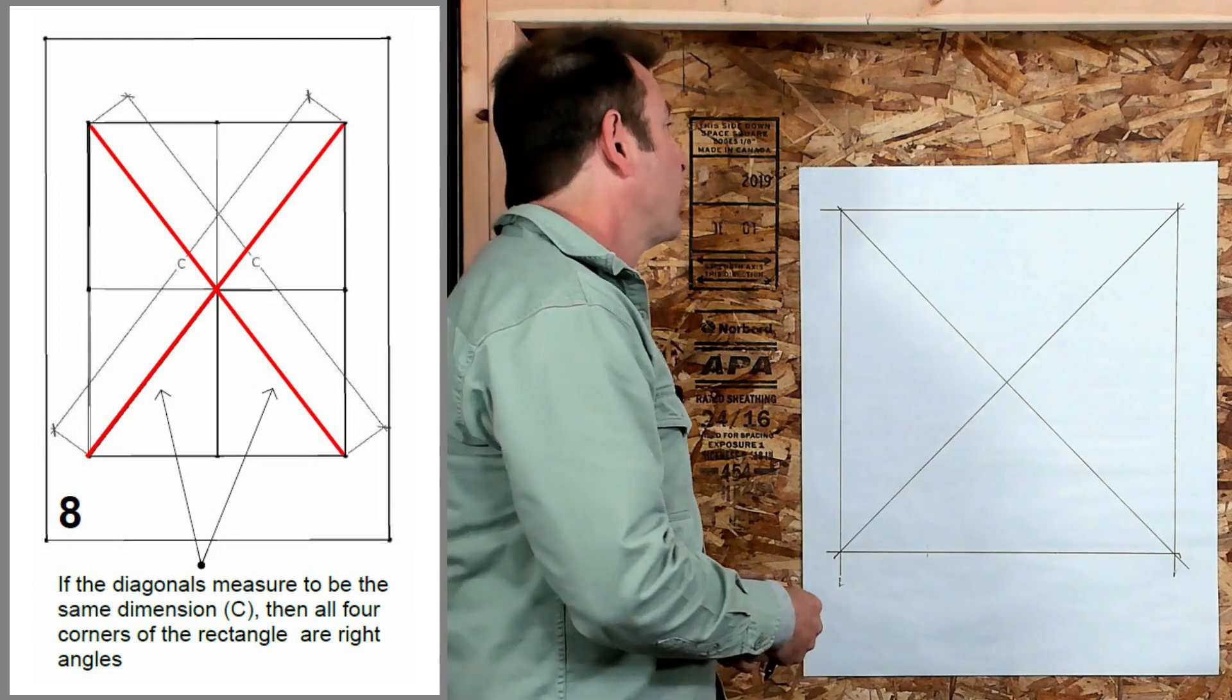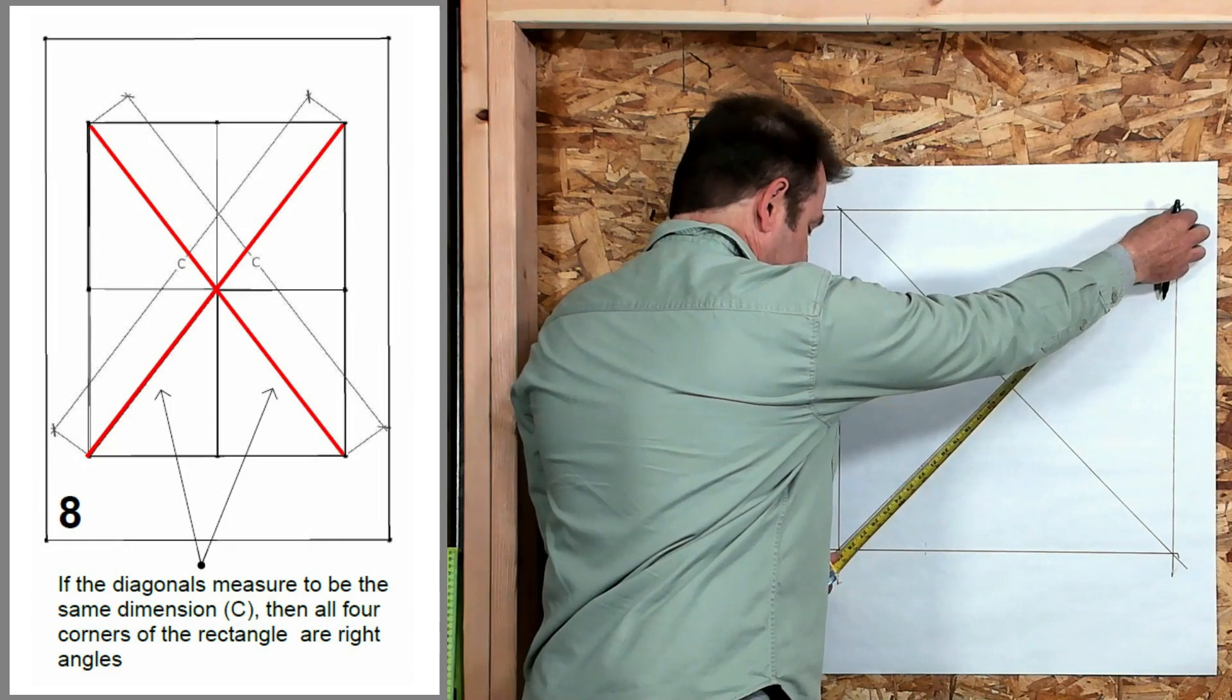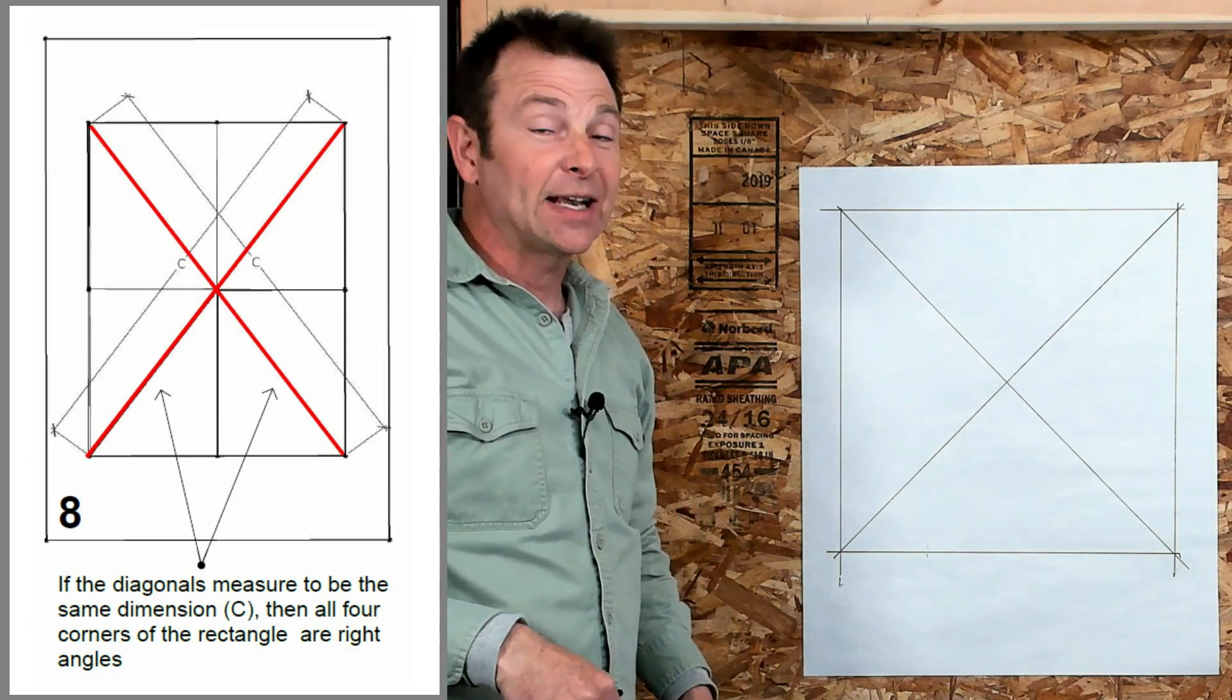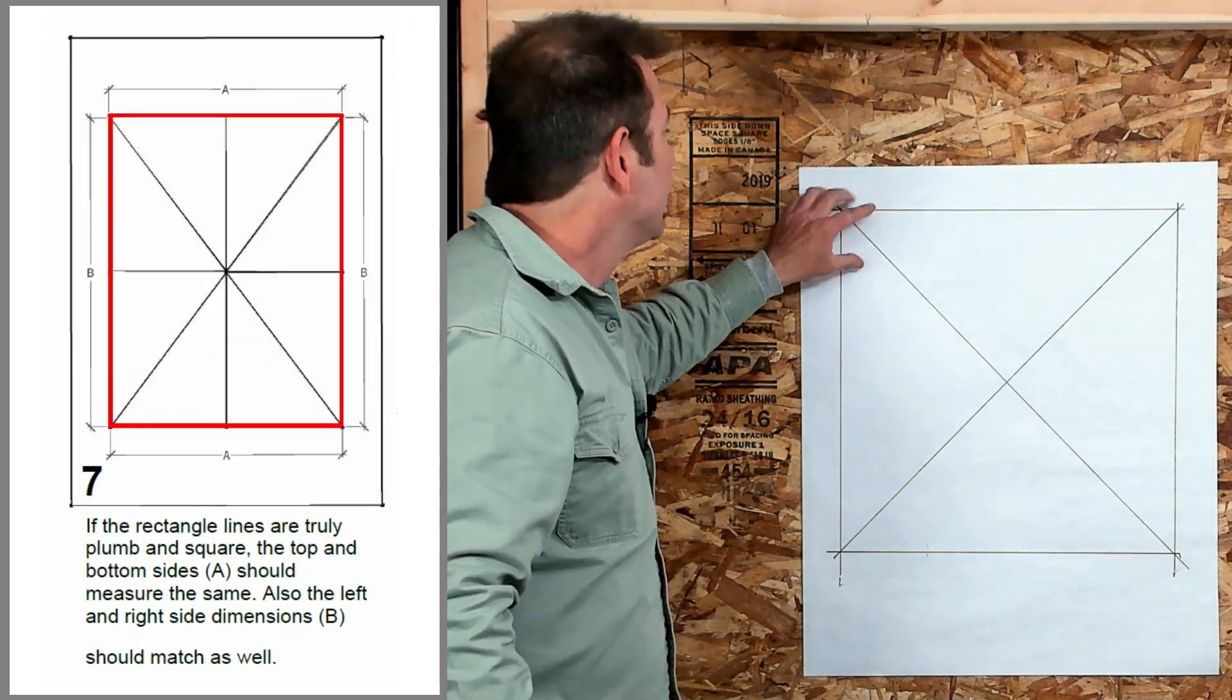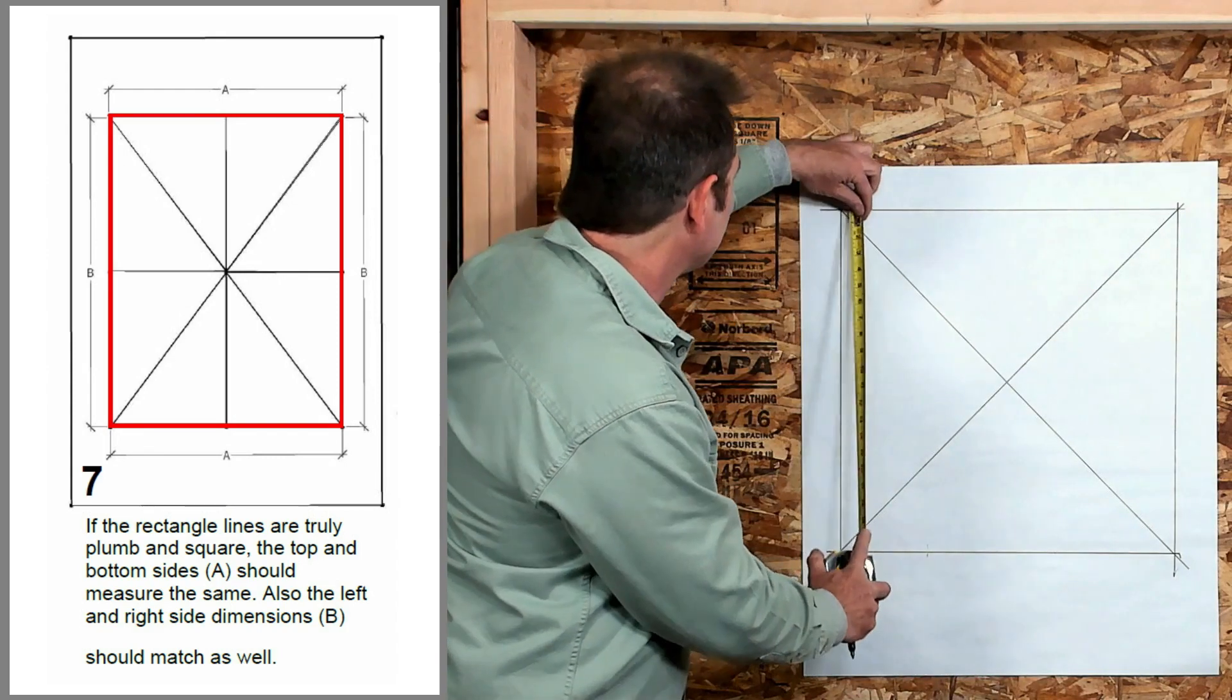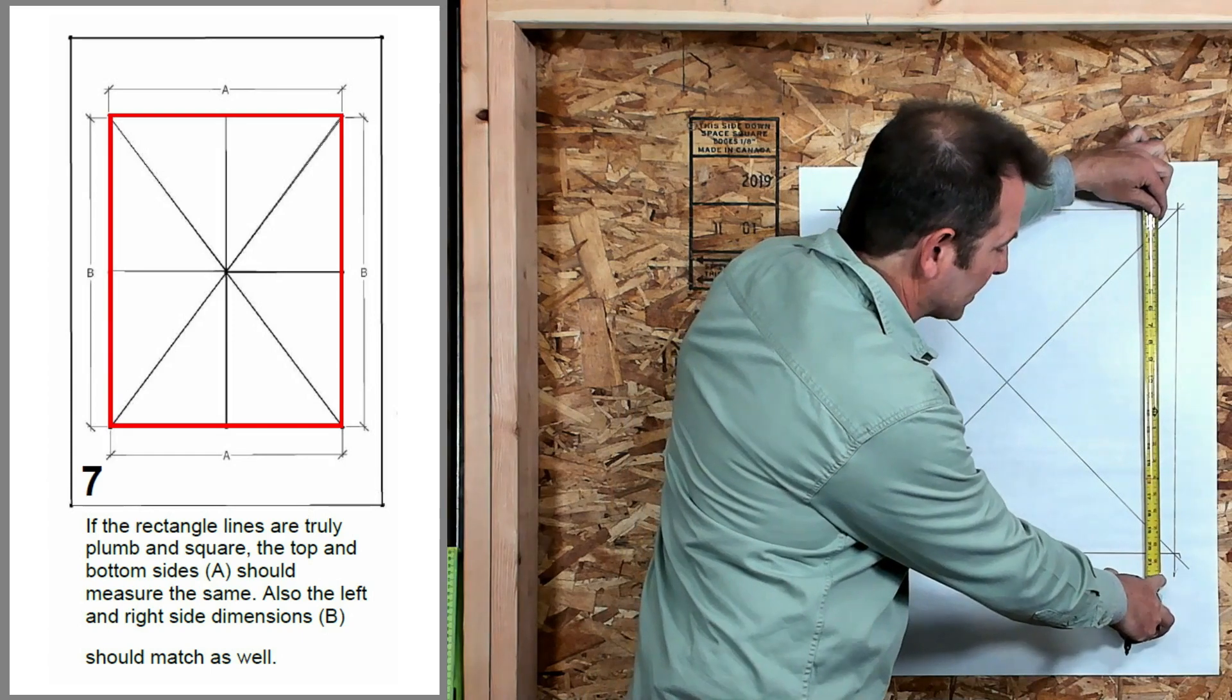Let's measure those diagonals. If you remember from our squaring lesson, if we pull a tape on those two diagonals we should get a measurement that's equal. This one is 28 and 3 quarters, and from this corner to this corner that's 28 and 3 quarters. What is that telling me?